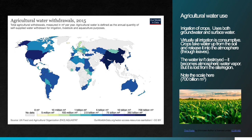Agricultural water use is the dominant use of water globally. The primary use of water in agriculture is the irrigation of crops, using both groundwater and surface water. Virtually all irrigation is consumptive because crops take water up out of the soil and release it into the atmosphere through their leaves as water vapor, which then leaves the region — blown out over an ocean or to another continent. It's lost from the region and no longer available. The scale on this graph goes up to about 700 billion cubic meters — we use a lot of water in agriculture globally.